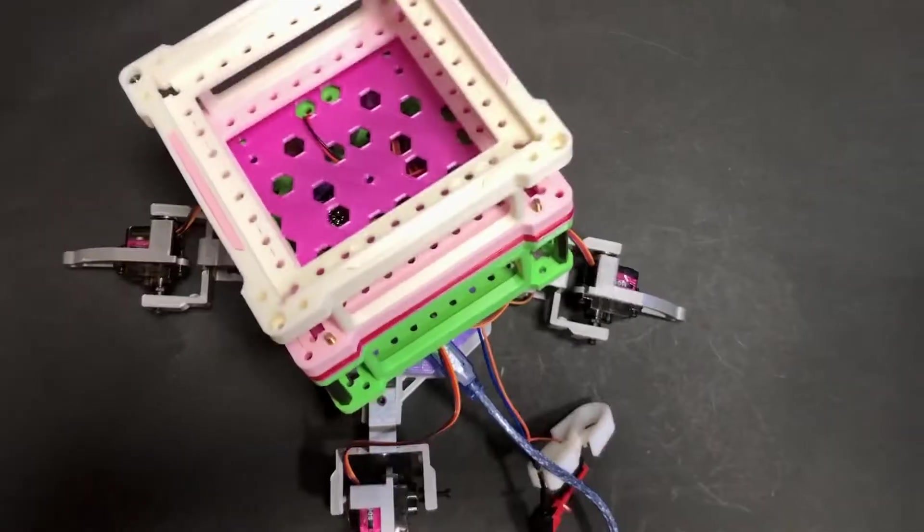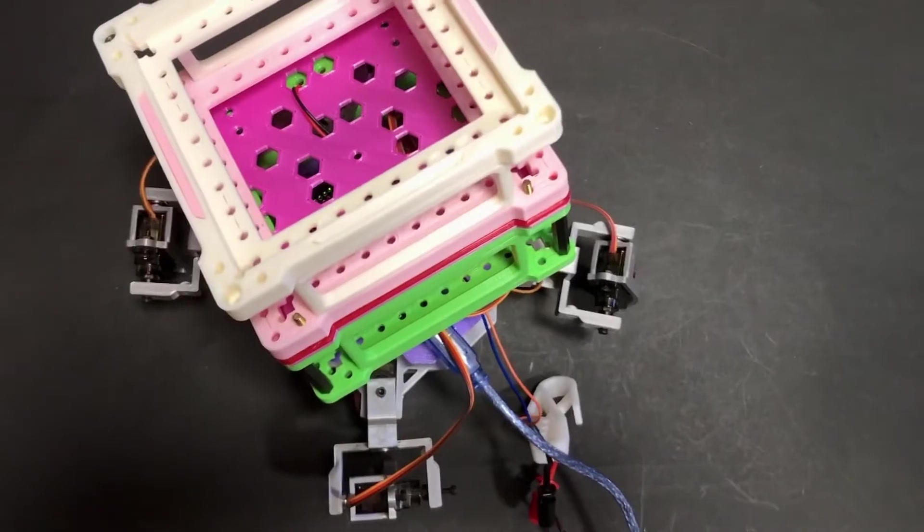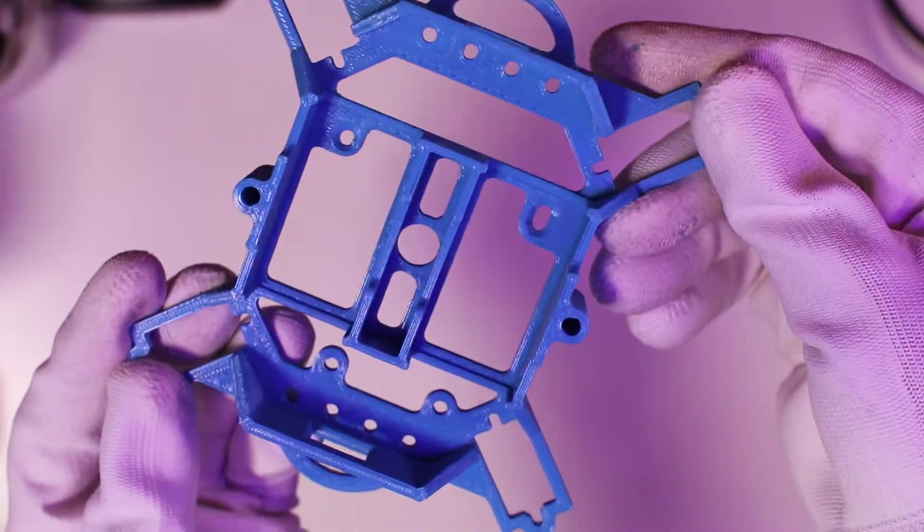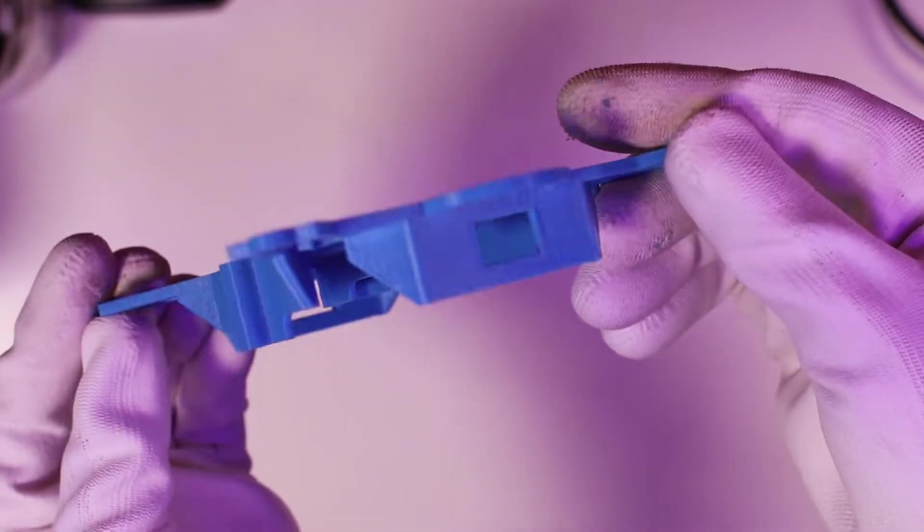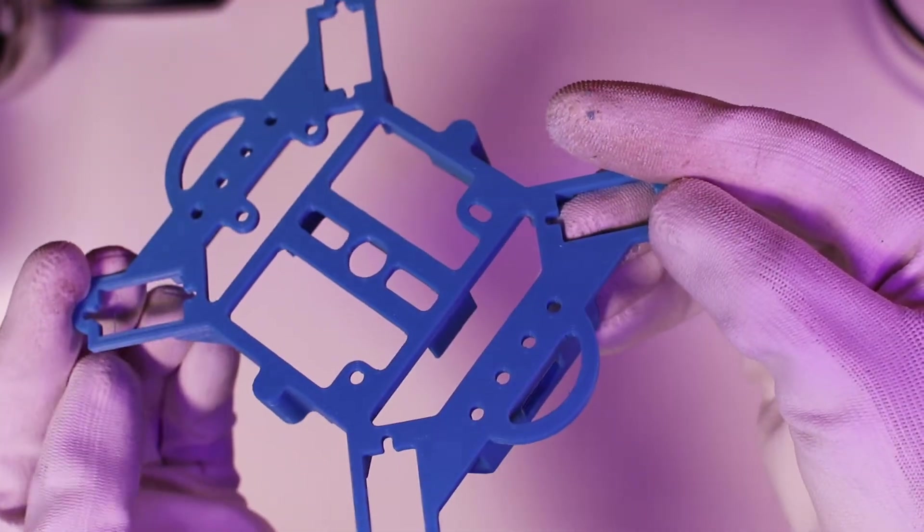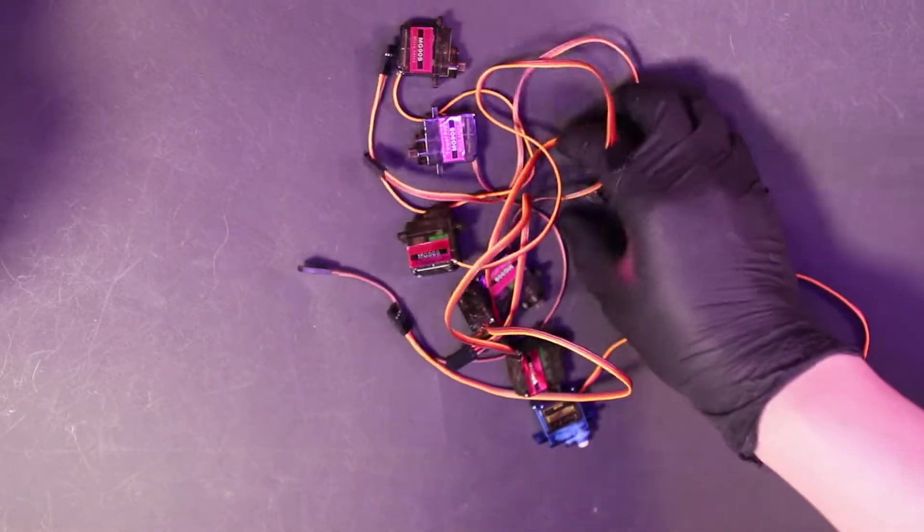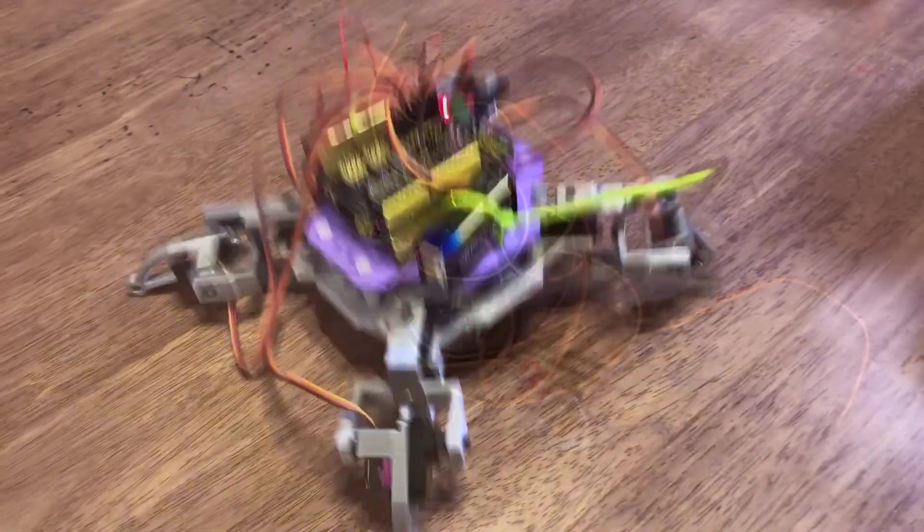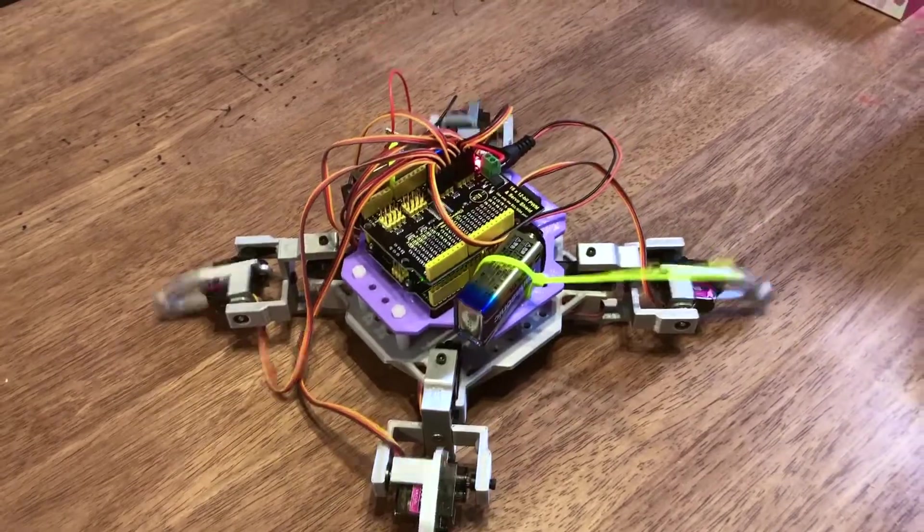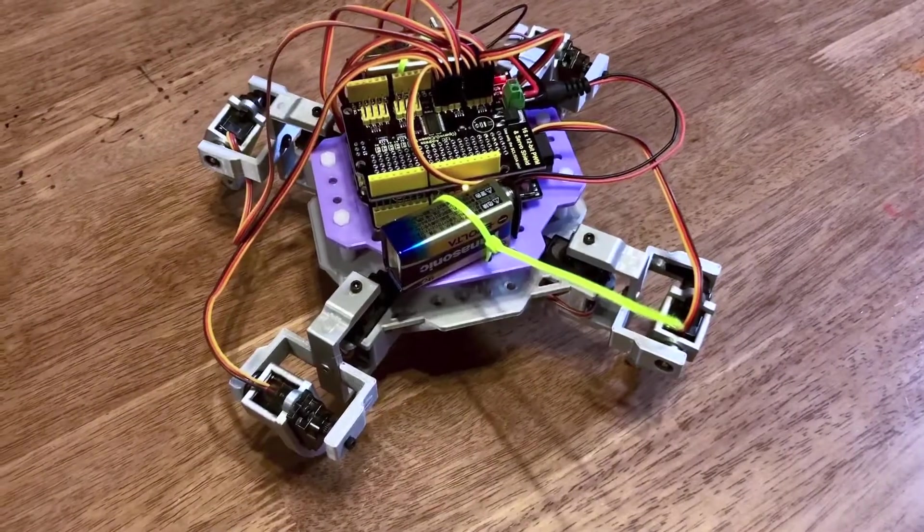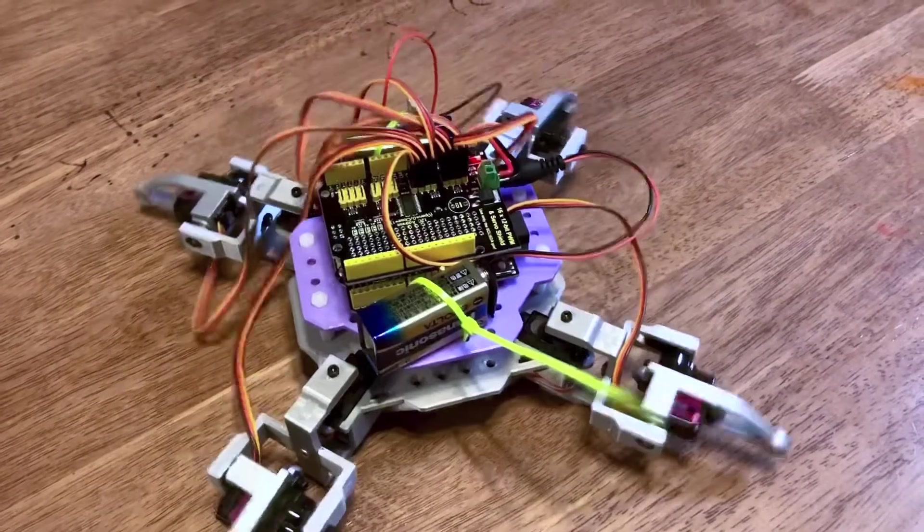Fortunately, the dimensions of MG90S are the same as SG90 servos, so no changes were needed for the design. The design is compatible both with SG90 and MG90S. And as you can see, it can stand just fine. And there's still a lot of power there.